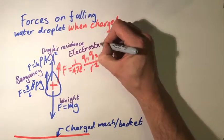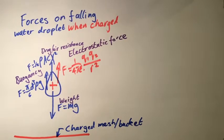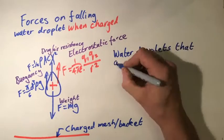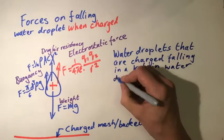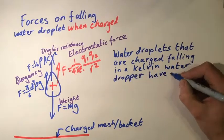This force is the electrostatic force given by Q1, which is the charge of the droplets, times Q2, which is the charge of the surface that it's landing on, over 4 pi epsilon 0 r squared, where r is the distance between the drops and the surface it is about to land on.